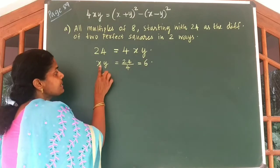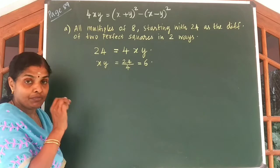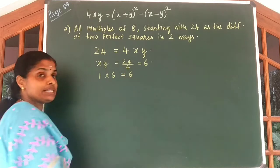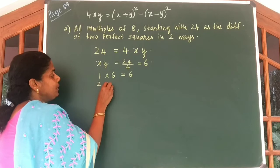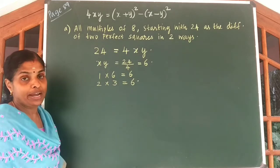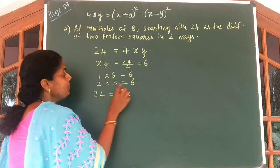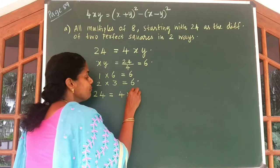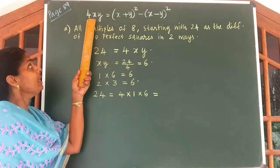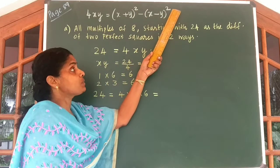That is, x into y value is equal to 6. So what are the possible values of x and y? We can say x is equal to 1 and y is equal to 6, or we can take x is equal to 2 and y is equal to 3. Then also you get 6. So we can write 24 as 4 into 1 into 6, which equals x plus y whole square minus x minus y whole square.